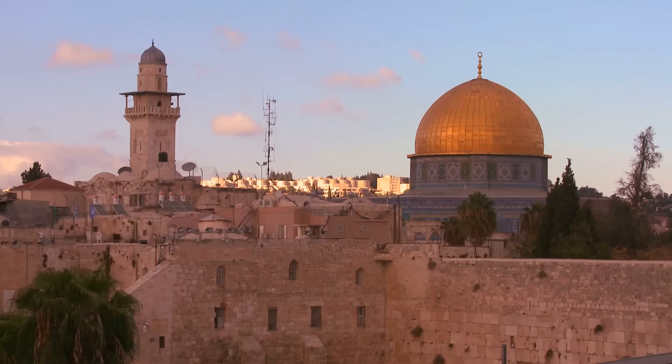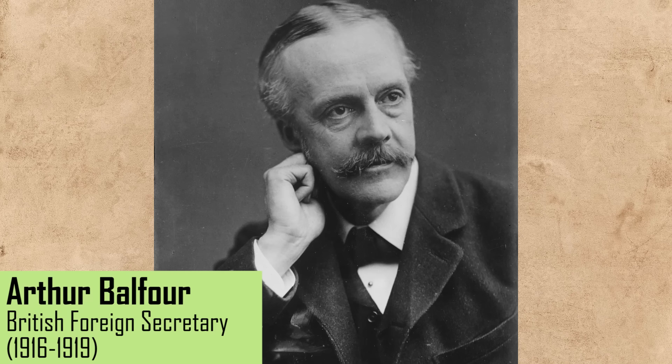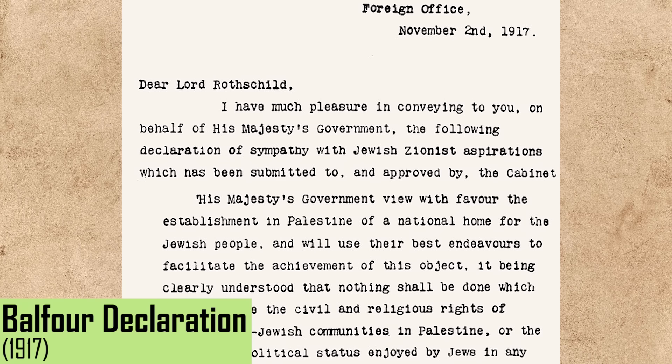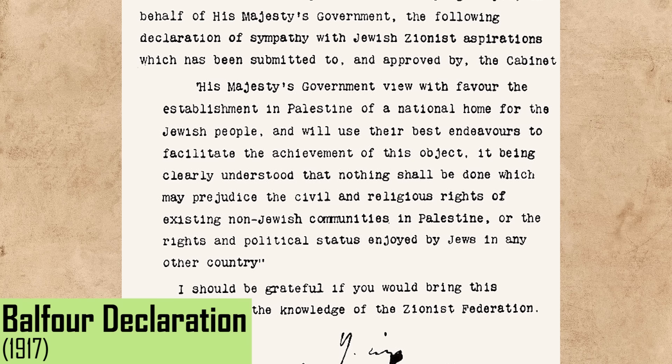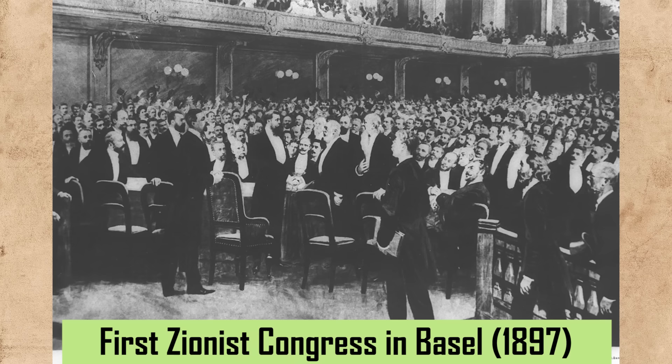To further confuse the situation, a few weeks before the world found out about the Sykes-Picot Agreement, Arthur Balfour, the British Foreign Secretary, issued the Balfour Declaration. This was a statement of support from the British government for the establishment in Palestine of a national home for the Jewish people. Balfour had written this in a letter to Lord Rothschild, a prominent Jewish Zionist leader.